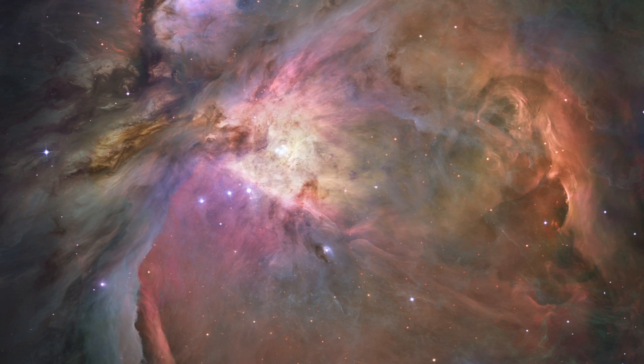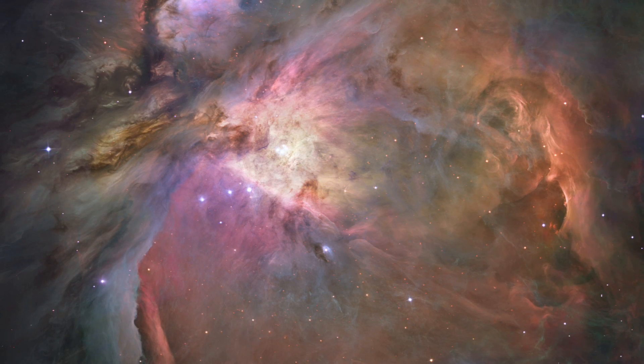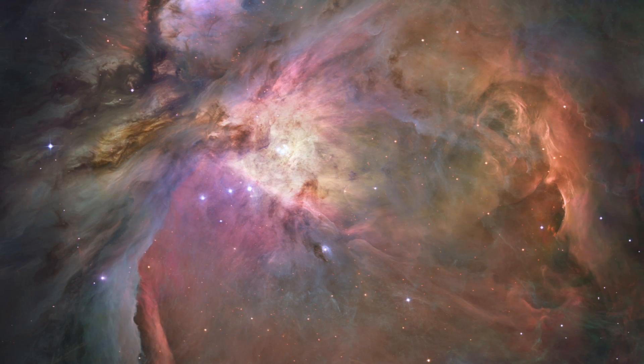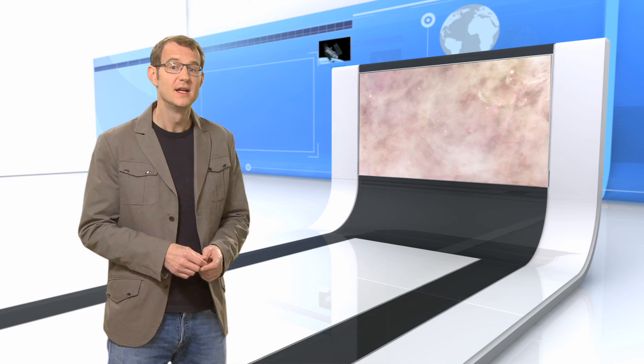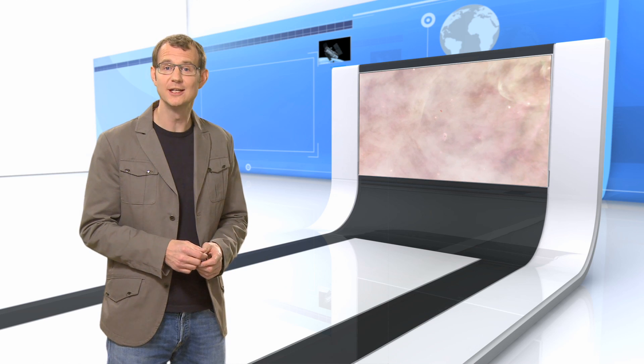The sharpest image ever taken of the Orion Nebula was released in 2006. This image, from Hubble's Advanced Camera for Surveys, shows more than 3,000 stars of various sizes, some of which had never before been seen in visible light. Now looking at the frenzied mixture of gas and swirling dust, it's pretty clear that a lot is going on inside the Orion Nebula.